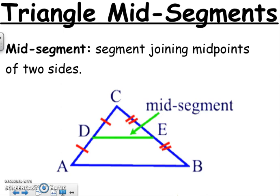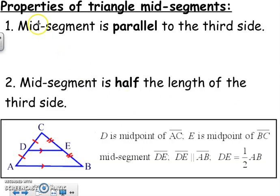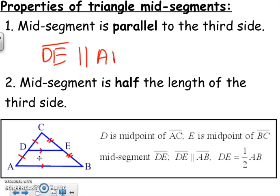There are some cool things that happen when you have a mid-segment. The mid-segment is going to be parallel to the third side. So what that means is DE is going to be parallel to line AB. Notice they gave us those little arrows telling us that they are parallel. The second thing that happens is the mid-segment is going to be half of the length of the third side. So if DE was 10, then AB is going to be double that, so 20.